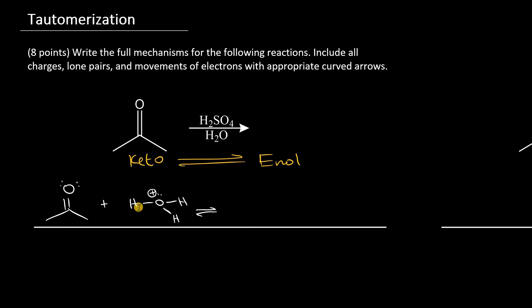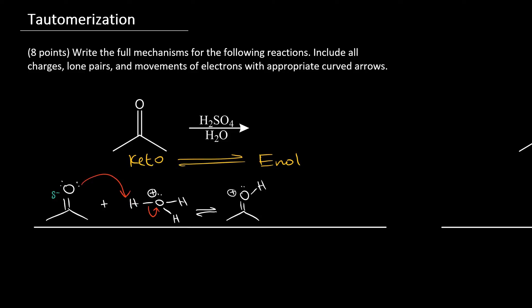Bronsted acids donate their protons, and protons have a positive charge. What's more subtle is that in carbonyl systems, the oxygen is partially negative. This means that when the acid deprotonates in solution, the carbonyl oxygen will acquire the proton. The bond between the hydrogen and the oxygen returns back to the oxygen in terms of electrons, and the oxygen acquires the proton in a typical nucleophile-to-electrophile interaction. Water is formed as a result.